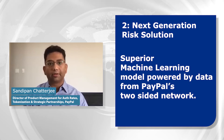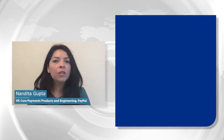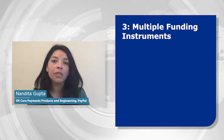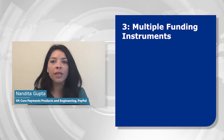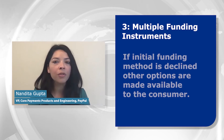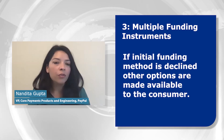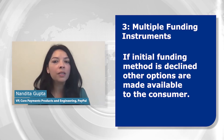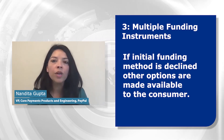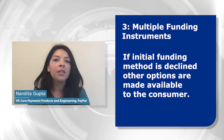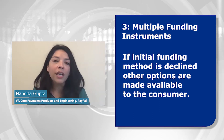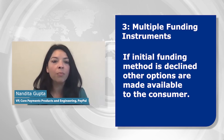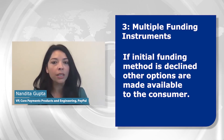The third is our multiple funding instruments. Our wallet enables secondary funding mechanisms when your initial payment method is declined. For example, if you have your credit card and that gets declined, we in certain use cases automatically move on and try your debit card to see if that payment method goes through. When used effectively, we can get very high approval rates with multiple instruments in the wallet.